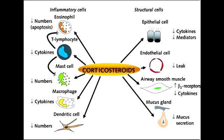Name some corticosteroids used in the treatment of asthma. Corticosteroids used in the treatment of asthma include beclomethasone and fluticasone.